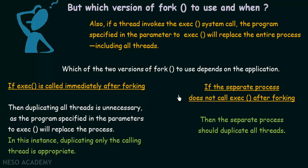These are the two scenarios for using the two versions of fork. If exec is called immediately after fork, duplicate only the invoking thread. If fork is not followed by exec, duplicate all threads in the new process. That is how we deal with issues related to fork and exec system calls in a multi-threaded approach. In the following lectures we will see more threading issues and how they are resolved.